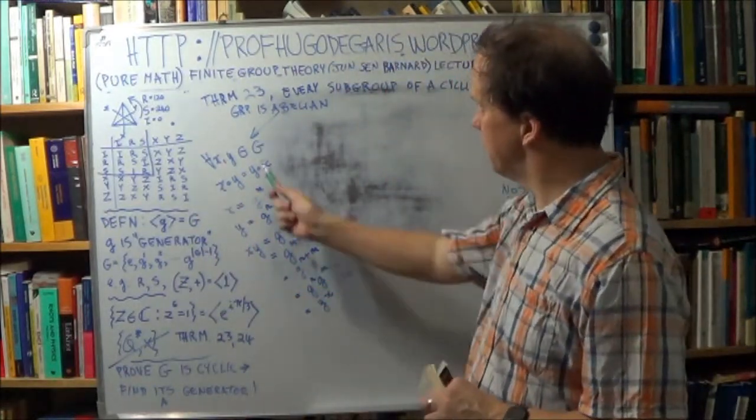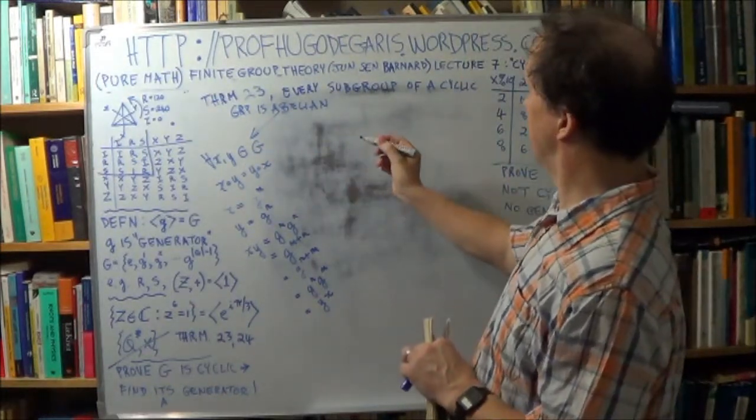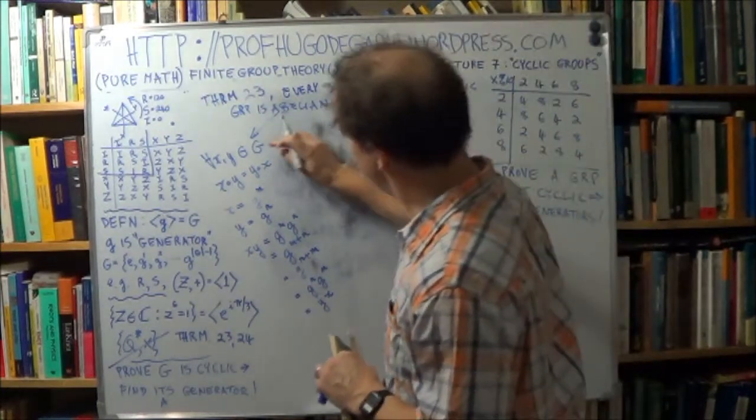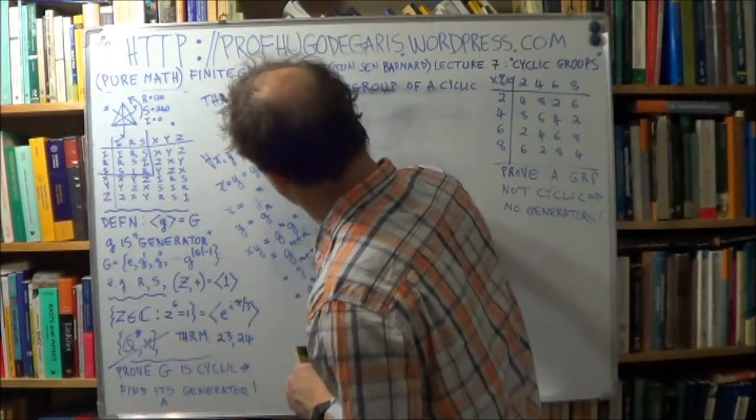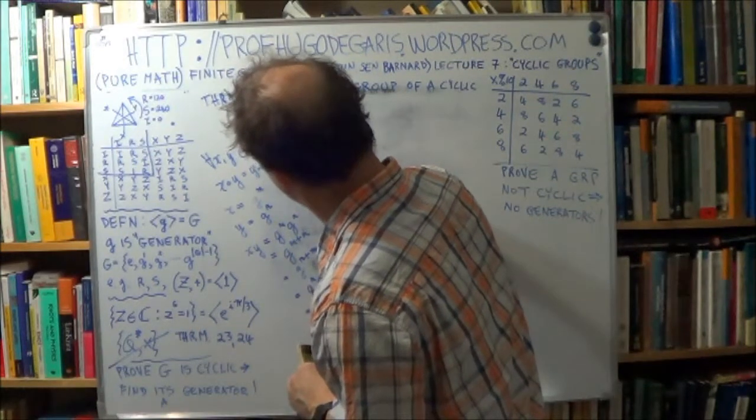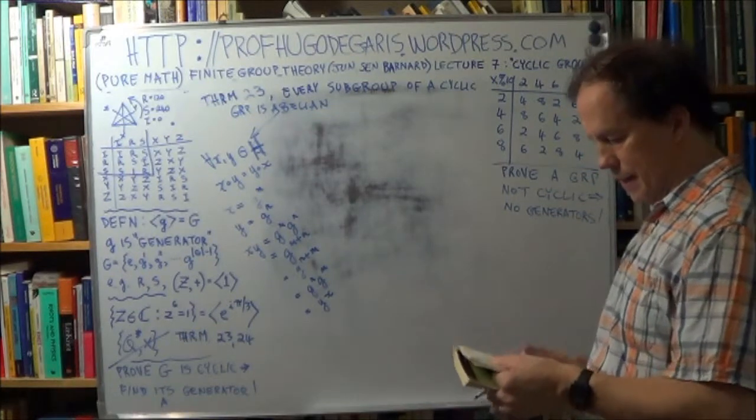So this subgroup, well, let's call it h. Call this h. It's a subgroup. h. But it's a general proof. All right?